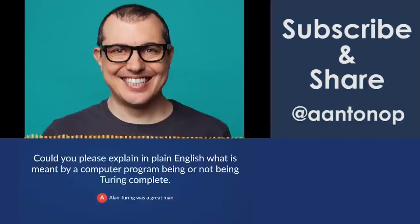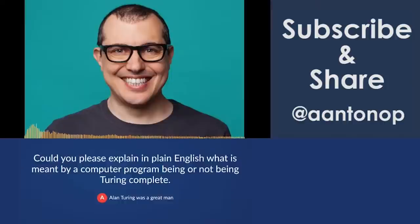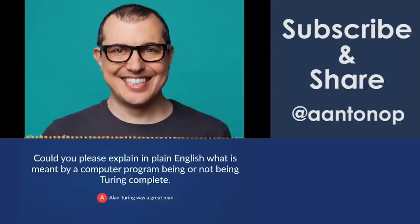Bitcoin's scripting language, for example, is Turing incomplete — it doesn't have loops, it doesn't have recursion. It's been carefully designed to be that way. In fact, it's harder to make something Turing incomplete, because many computer programs have been made accidentally Turing complete where people thought they had predictable runtime and in fact they did not.